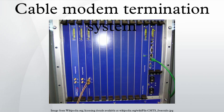A typical CMTS allows a subscriber's computer to obtain an IP address by forwarding DHCP requests to the relevant servers. The DHCP server returns what looks like a typical response, including an assigned IP address for the computer, gateway router addresses to use, DNS servers, etc.